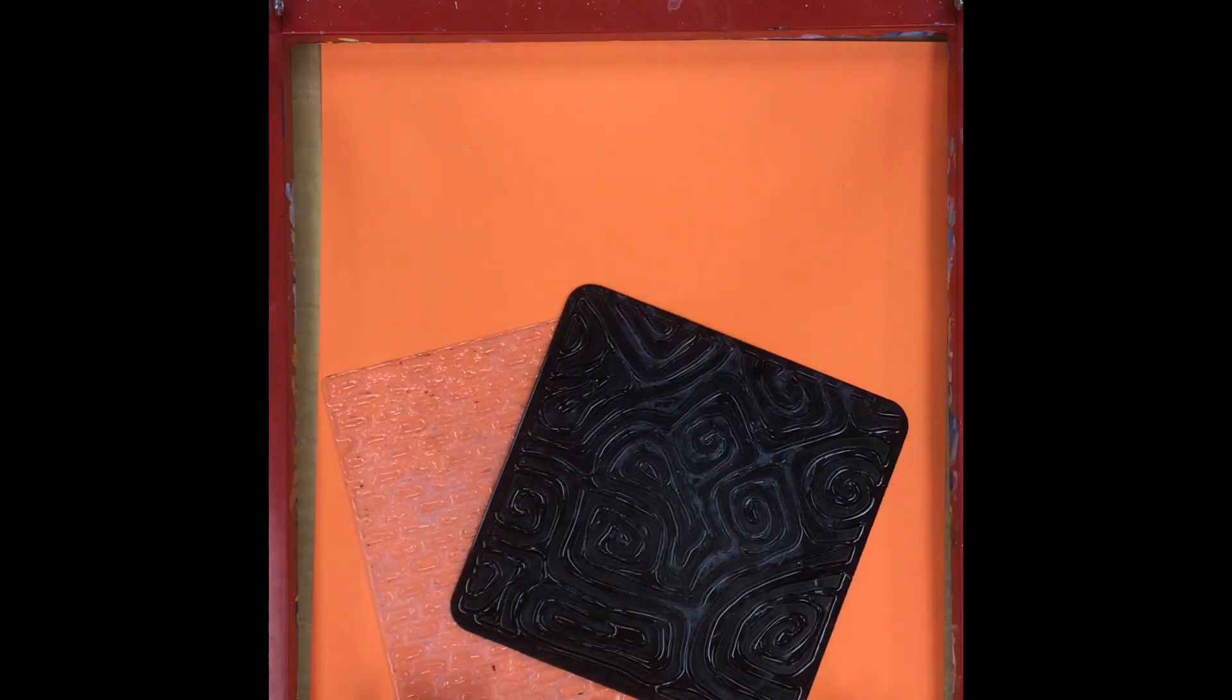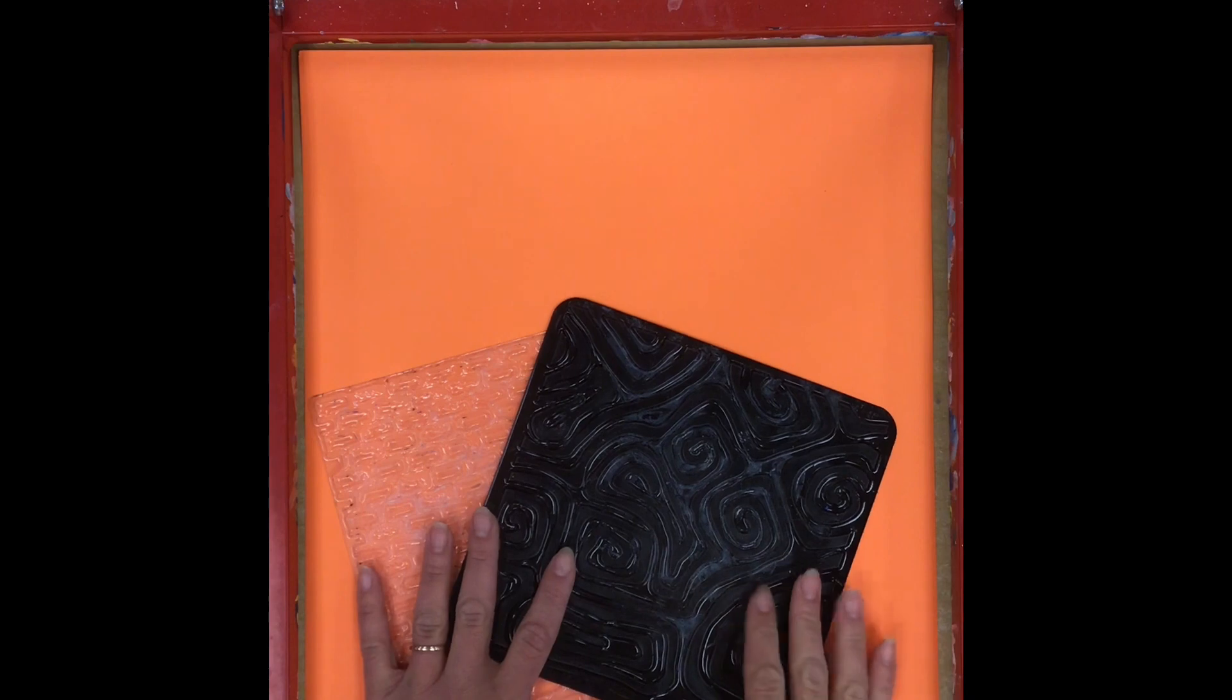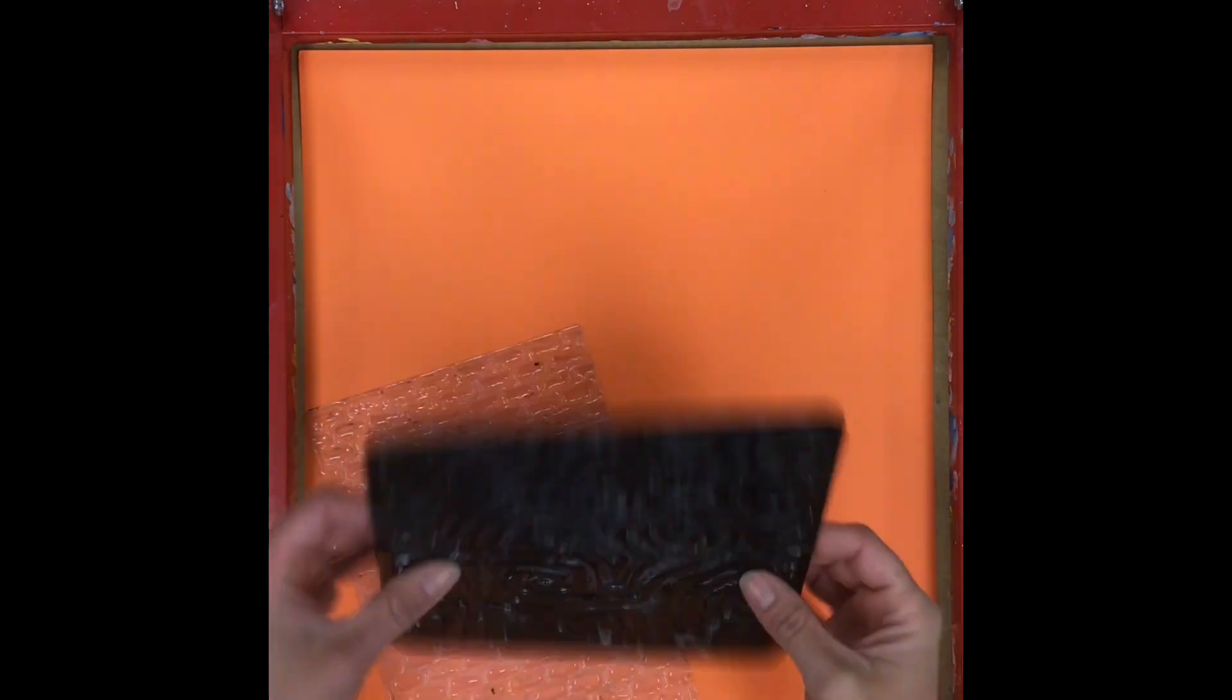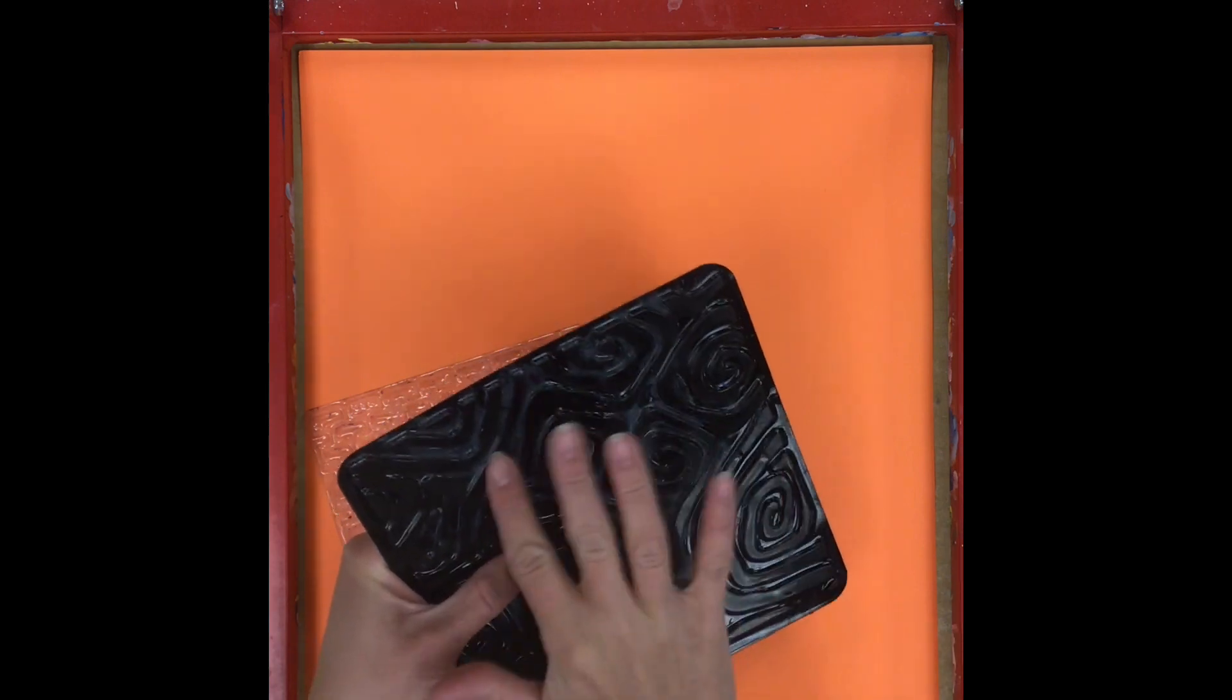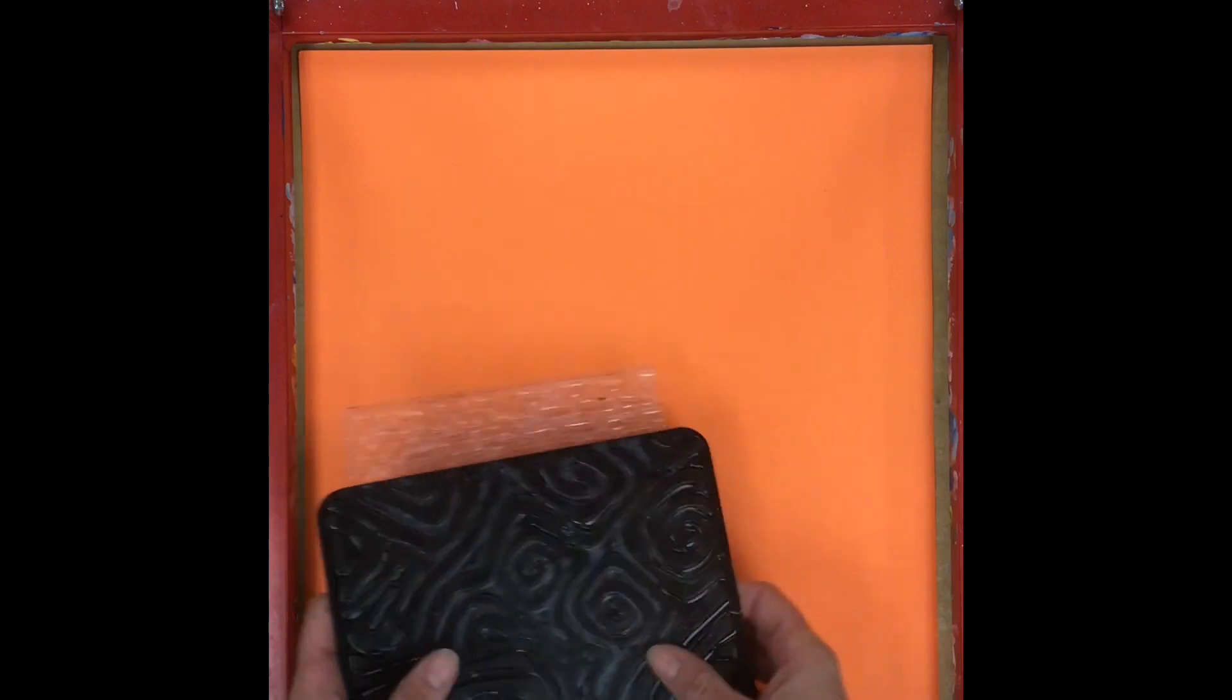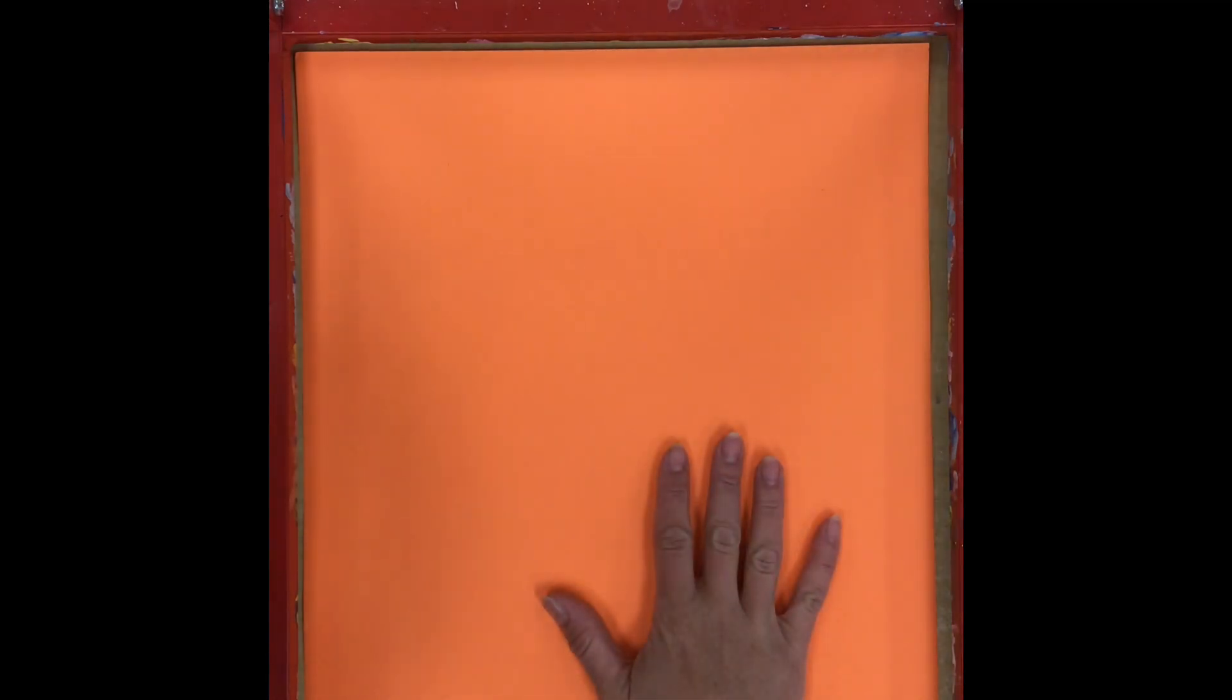Today we're going to create a background for our Andy Warhol pop art project. We're going to be using some tools - little plastic sheets that have texture on them, a bumpy texture.